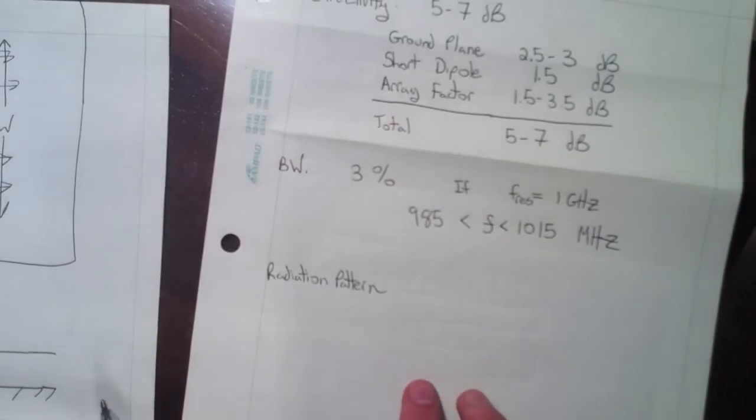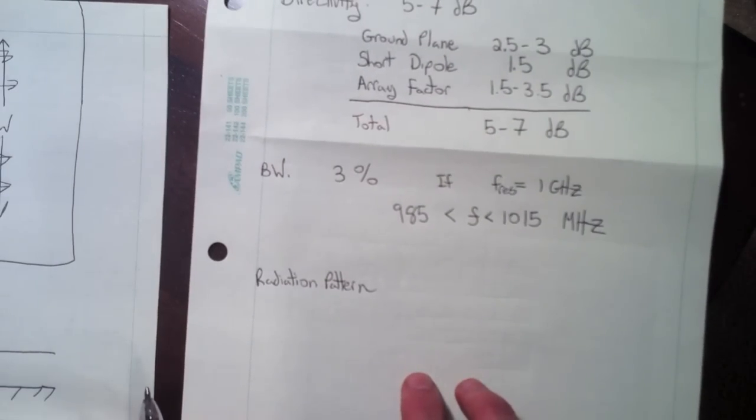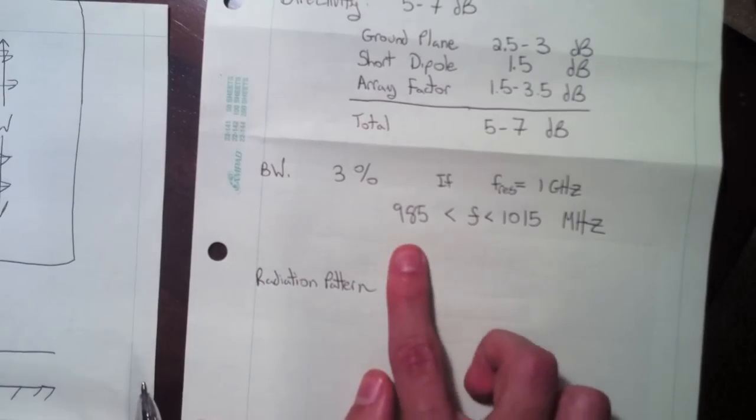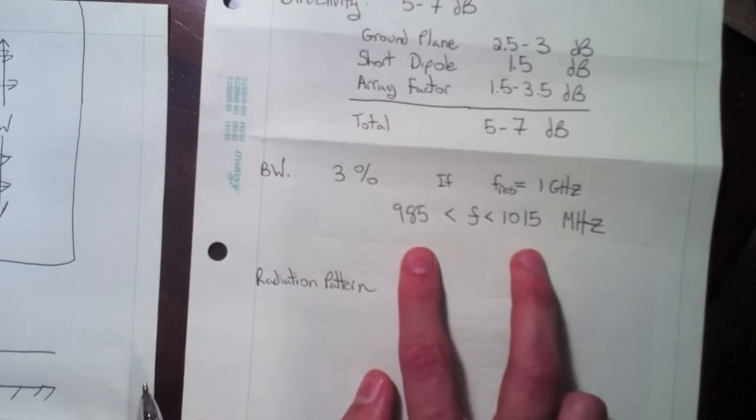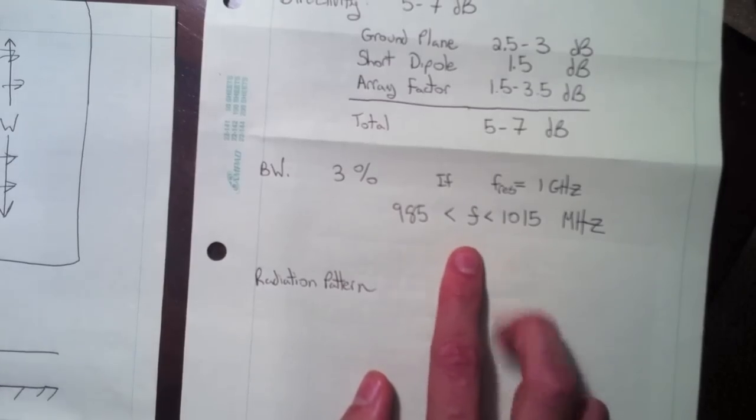The bandwidth of a patch is pretty small. Typically for a square wavelength patch you get 3%, which means if your resonant frequency is 1 GHz, you're basically going to have this type of bandwidth for your frequency, 30 MHz bandwidth.